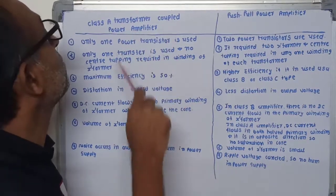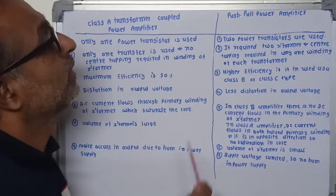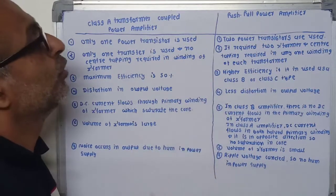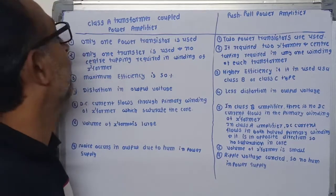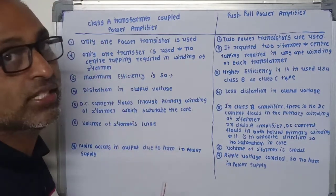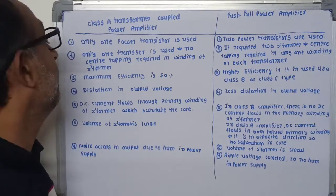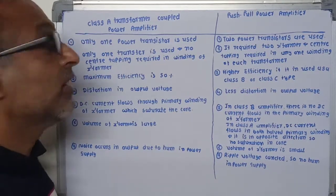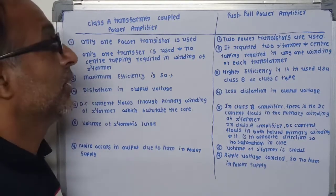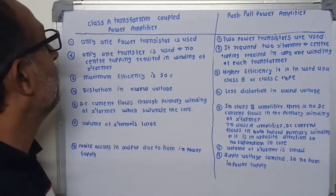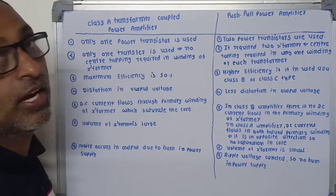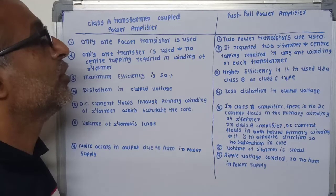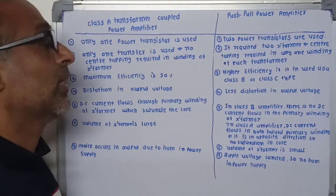Comparison between Class A transformer-coupled power amplifier and push-pull power amplifier. First, in Class A, only one power transistor is used, while in push-pull, two are used. In Class A, no center tapping is required in the transformer winding. In push-pull, two transformers are required and center tapping is required in one winding of each. The maximum efficiency of Class A is around 50%, but push-pull efficiency is very high when used as Class B or Class AB amplifier.